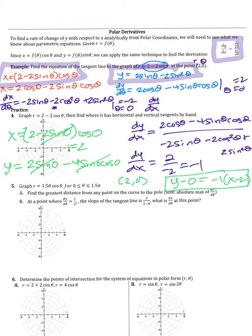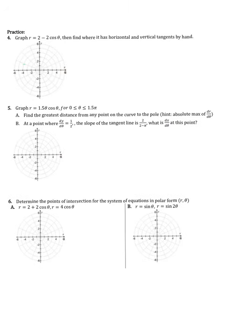The equation of the tangent line is y − 0 = −1·(x − 2). To recap: to find the tangent line to a polar curve, define x = r·cosθ and y = r·sinθ, take dx/dθ and dy/dθ, form dy/dx = (dy/dθ)/(dx/dθ), evaluate at the given θ value, then plug θ into the x and y expressions to find the rectangular point, and write the line equation.